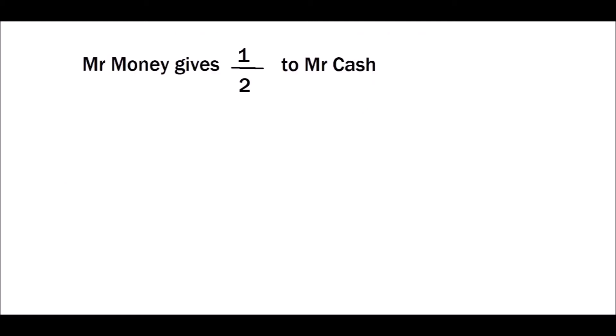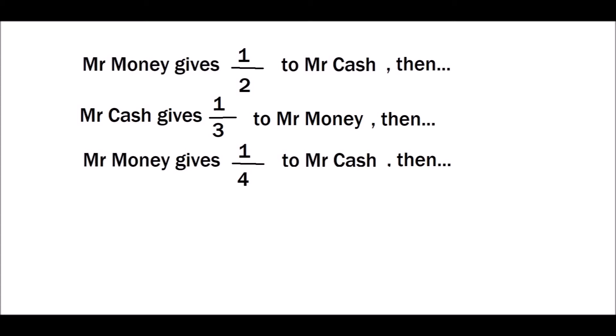First, Mr. Money gives half of his money to Mr. Cash, and then Mr. Cash gives one-third of what he has now to Mr. Money.